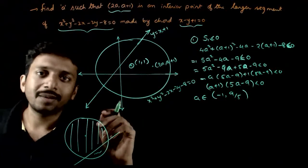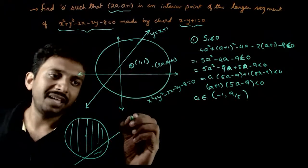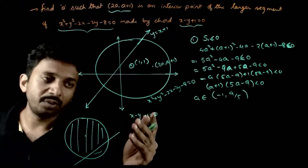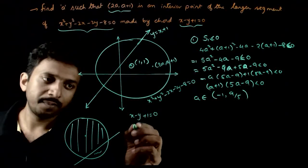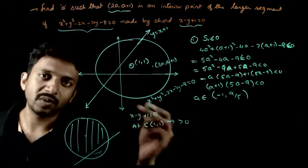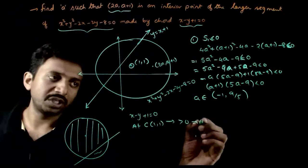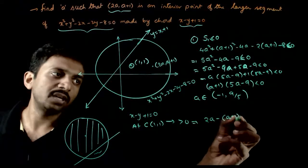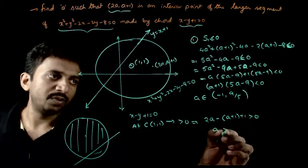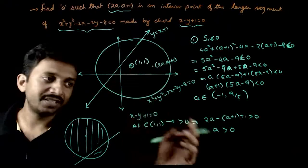The center (1, 1) and the point (2a, a+1) must lie on the same side of the line x − y + 1 = 0. Substituting the center (1, 1): 1 − 1 + 1 = 1, so the expression is positive. This means the point (2a, a+1) must also give a positive value: 2a − (a+1) + 1 > 0, which simplifies to a > 0. So for this point to lie on the major segment side, a must be positive.